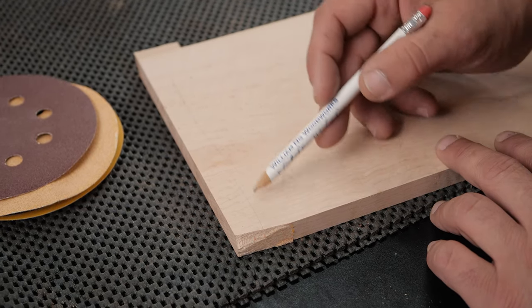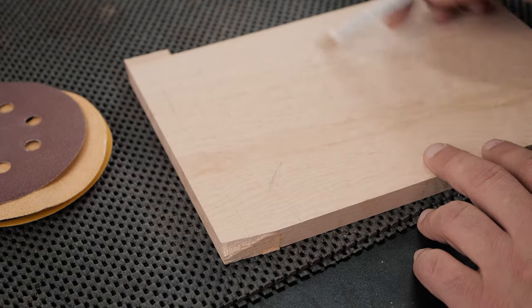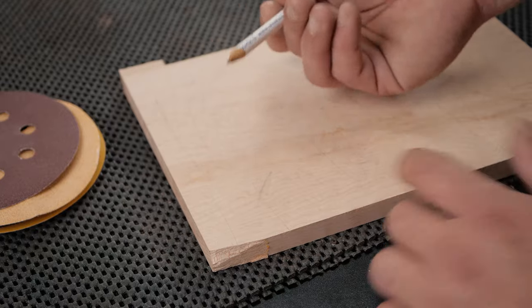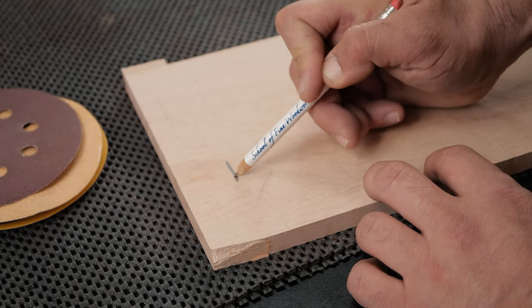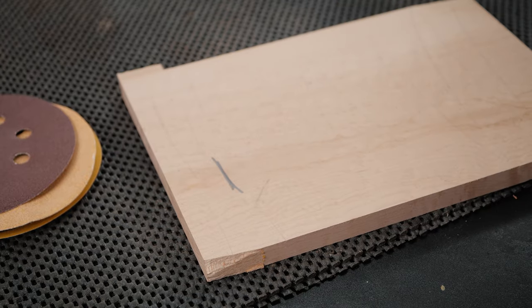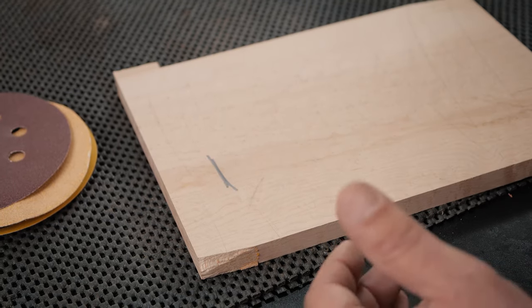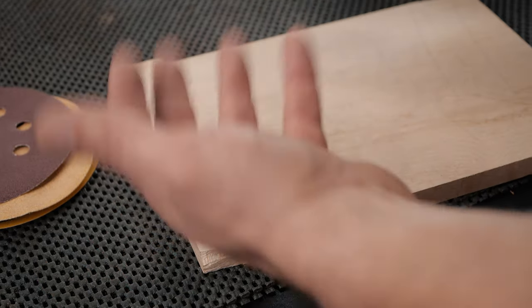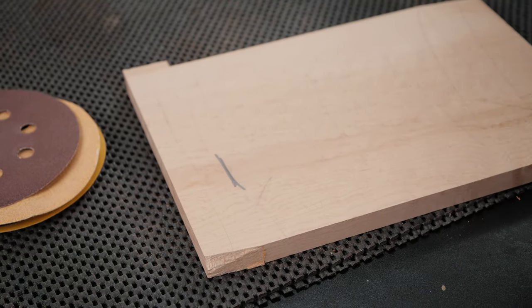When I get to 220, I won't go as heavy. I'll just lightly do it because 220 is going to go really fast. Some pencils, especially if you're using a thick carpenter pencil and you go really dark, can even leave graphite in the wood. So when I get to the final grit, I'll go really light. I'm going to go over this with all the grits very quickly, and then we'll check the thickness.